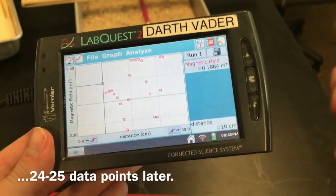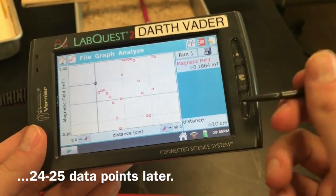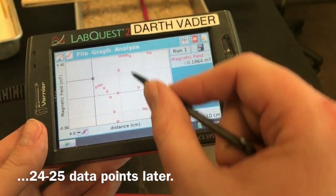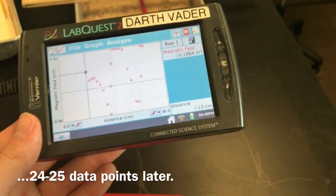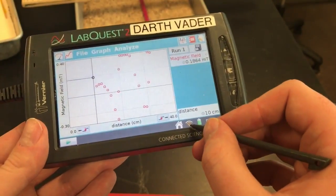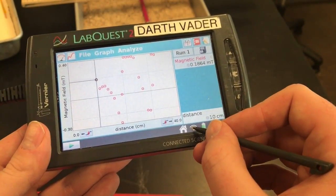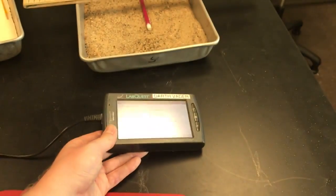Okay. So I ran my 24 points, 24, 25 points, it ended up looking something like this. So your data should look somewhat similar. I'm going to connect this to graphical analysis on my iPad right away.